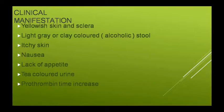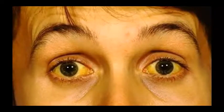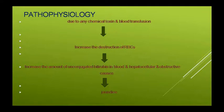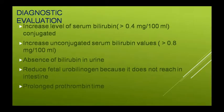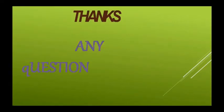Clinical features में चाय के जैसा urine pass होता है और PT बढ़ जाता है। आंखें और skin पीली पड़ जाती हैं। Lab findings में: conjugated bilirubin 0.4 mg per 100 ml से ज़्यादा बढ़ जाता है, serum bilirubin की value 0.8 mg per 100 ml से ज़्यादा हो जाती है, urine में bilirubin दिखाई देता है, fecal urobilinogen कम हो जाता है क्योंकि intestine में नहीं पहुंच पाता, और PT काफी लंबा हो जाता है।